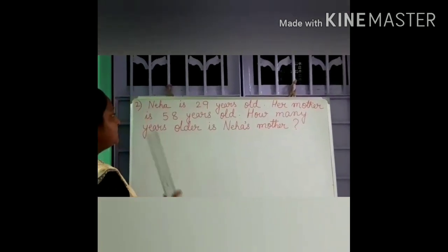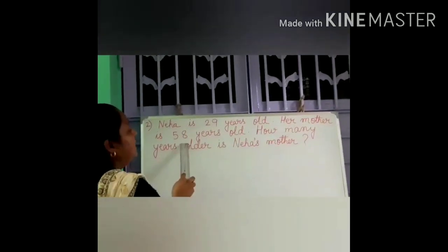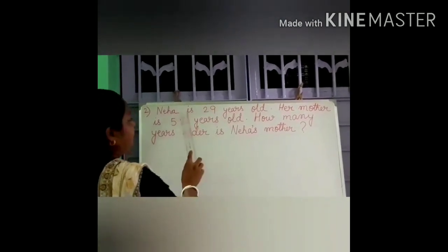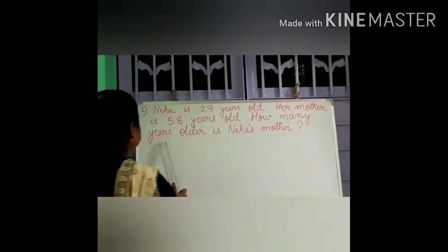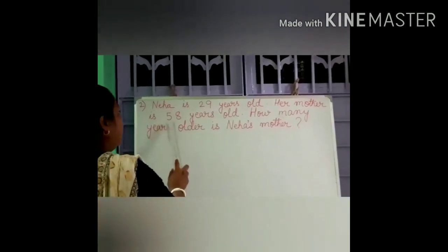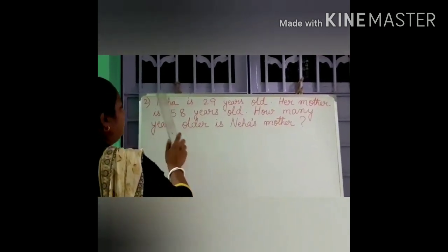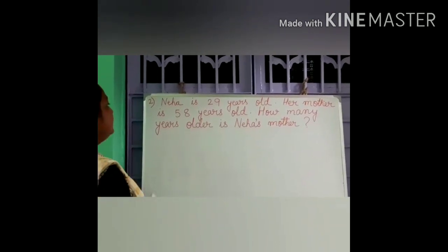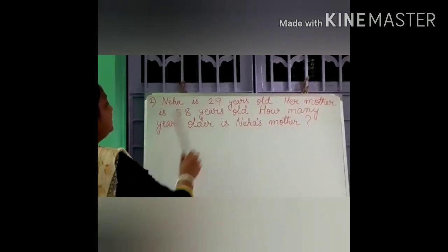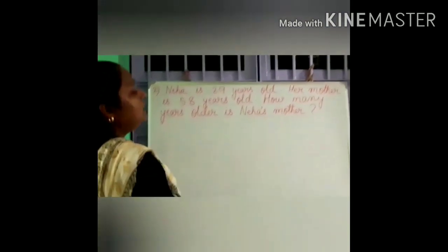Who is younger? Whose age is less? Neha's age. And whose age is more? Neha's mother is older. Now what is given and what is asked? How many years older is Neha's mother than Neha? How many more years older is she? So in this case you have to find the difference of their ages — that will give the answer of how many more years Neha's mother is older than Neha.